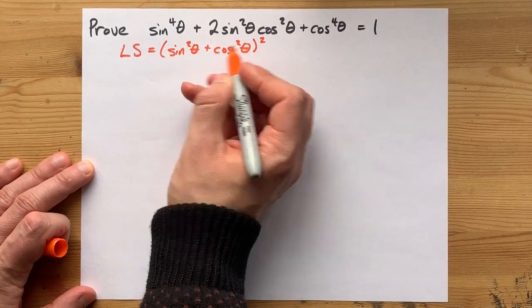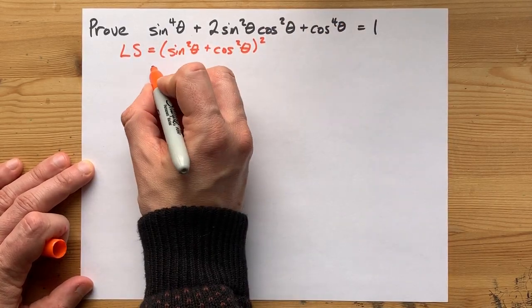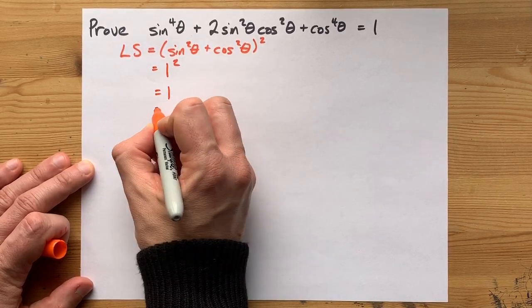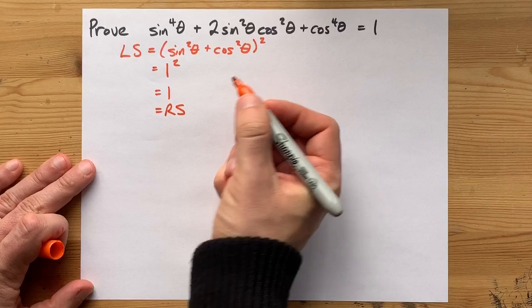Sin²θ + cos²θ, the very middle of this, ends up being 1, and 1 squared is 1. Therefore, the left side equals the right side.